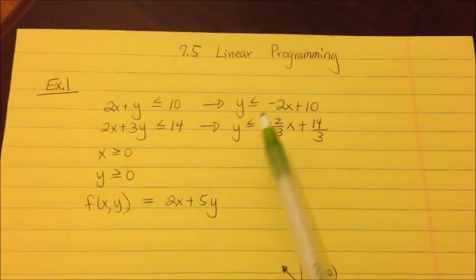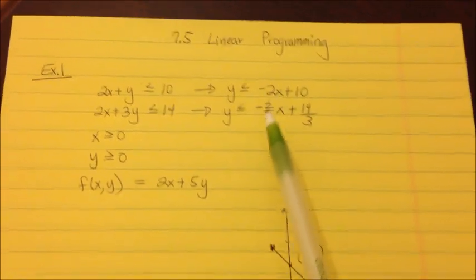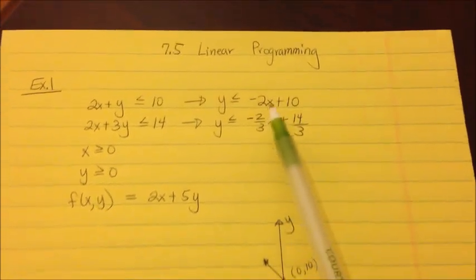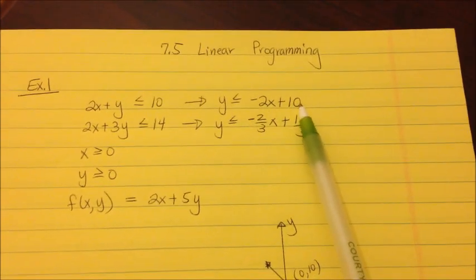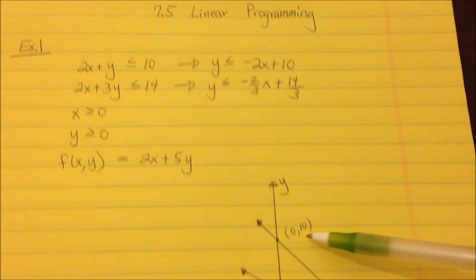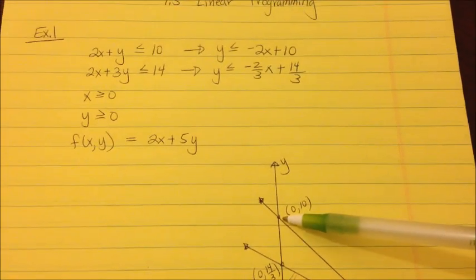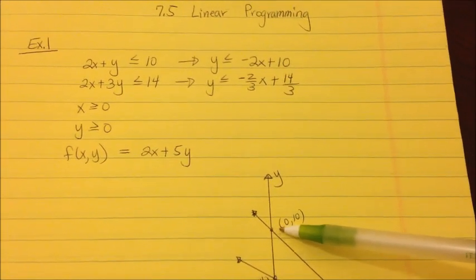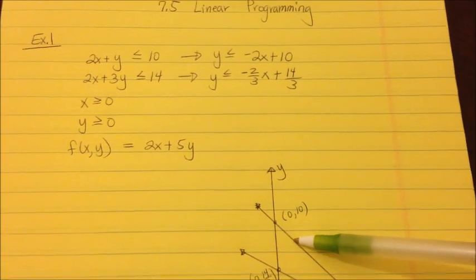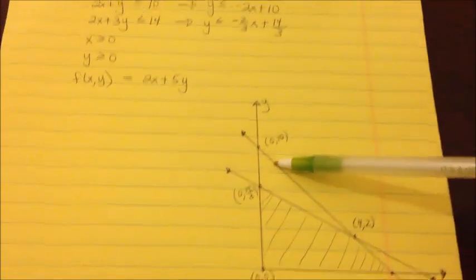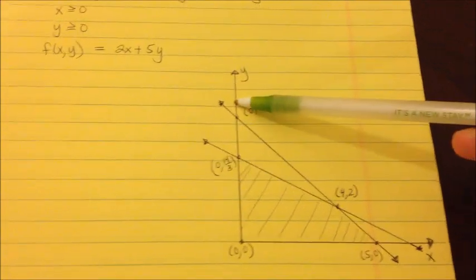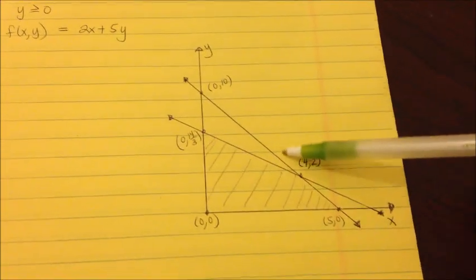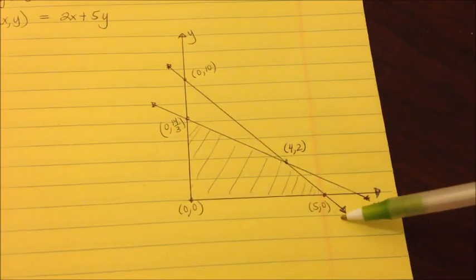Now we're going to graph the first equation. I start at 10 — that's the y-intercept — so I start at 10 on the y-axis. Then I run 1 and go down 2, plotting a couple of those points to draw the line.